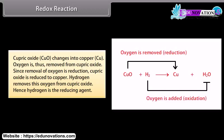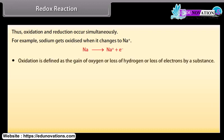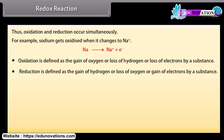Cupric oxide changes into copper. Oxygen is thus removed from cupric oxide. Since removal of oxygen is reduction, cupric oxide is reduced to copper. Hydrogen removes this oxygen from cupric oxide. Hence, hydrogen is the reducing agent. Thus, oxidation and reduction occur simultaneously. For example, sodium gets oxidized when it changes to Na+. Oxidation is defined as the gain of oxygen or loss of hydrogen or loss of electrons by a substance. Reduction is defined as the gain of hydrogen or loss of oxygen or gain of electrons by a substance.